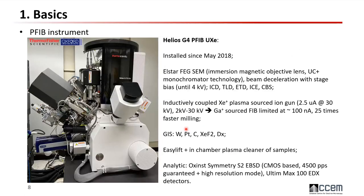Back to our instrument at CCM: we use the Lyra G4 P3, installed since May 2018. It is equipped with a Hyperion ASM FIB column and an inductively coupled xenon plasma source. With the ASM column and monochromator, you can achieve spatial resolution below one nanometer. It also has beam deceleration, allowing work on non-conductive samples, and different detectors including the TLD and CBS, enabling very high resolution imaging.